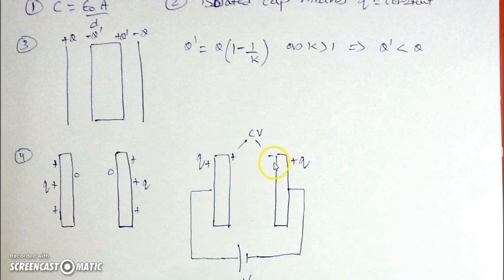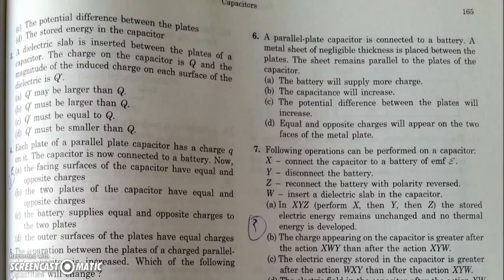This will be plus CV, this will be minus CV, but the outer charges will remain the same. The battery will just take a plus CV charge from this to this plate, so the final charge will be as shown in the diagram when the battery is connected. This final situation will be like this. Let's look at the next question.